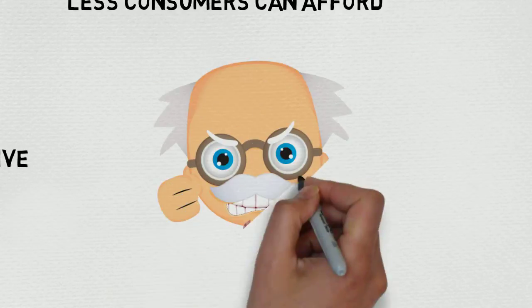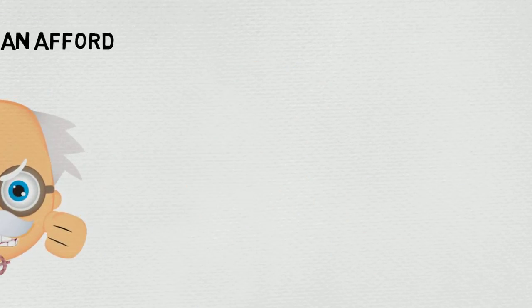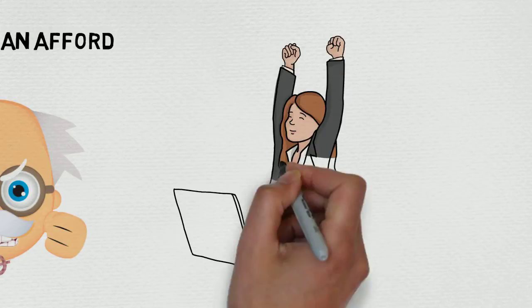When a Veblen good's price decreases, demand will also decrease since status-aware customers will see it as less exclusive.